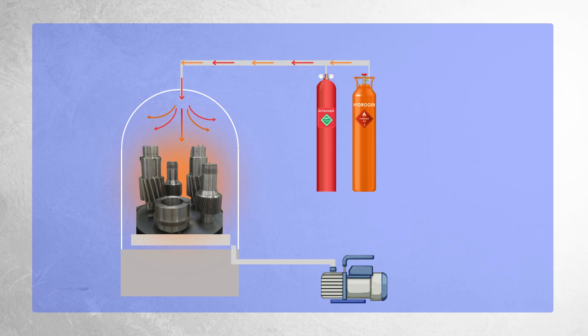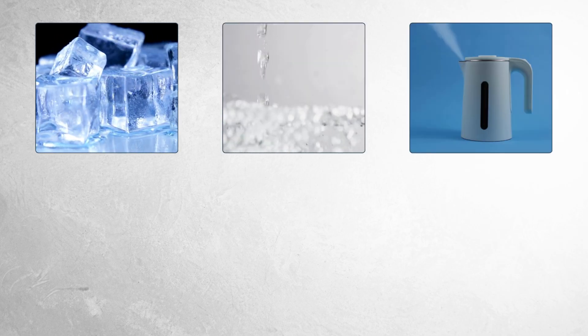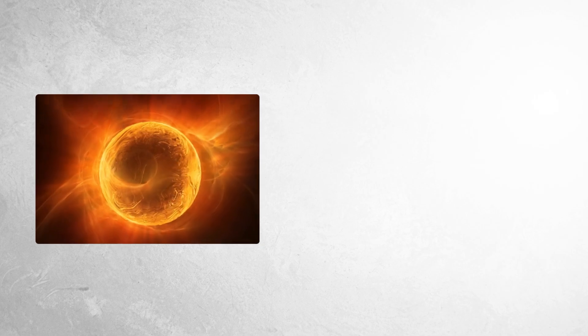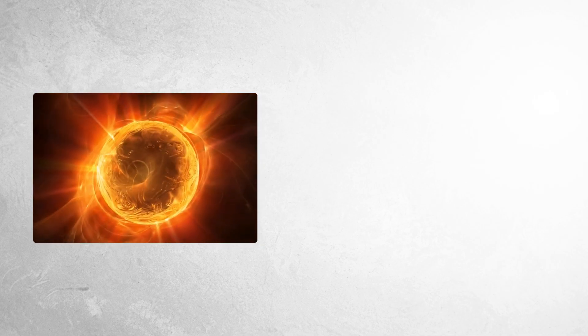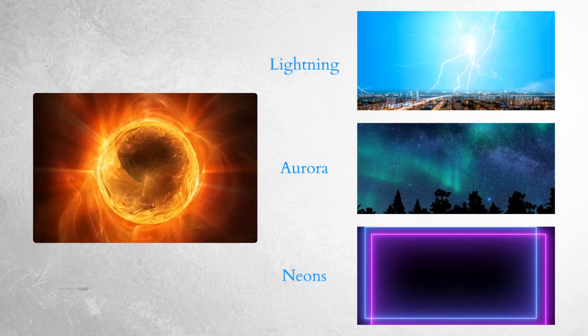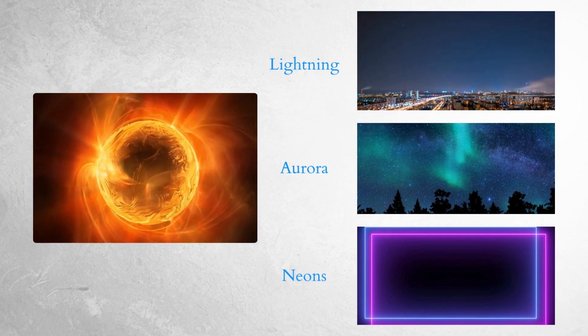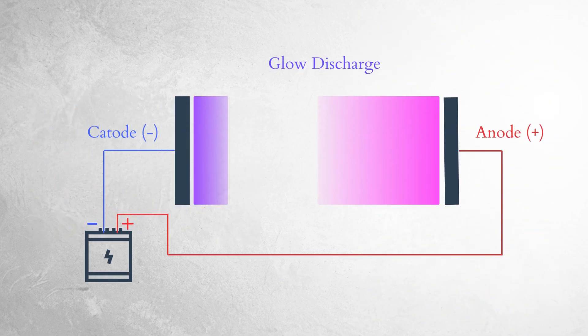But how do we get from parts arranged in the chamber to parts in plasma? Let's start from the beginning. There are four states of matter: solid, liquid, gas, and plasma. Plasma is the most common state of matter in the universe, and it can also be formed on Earth in different ways. In our case, we are looking at a glow discharge.